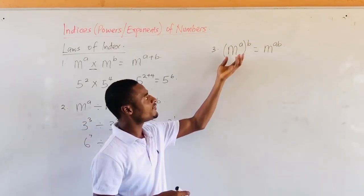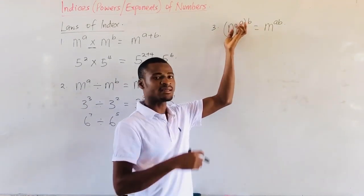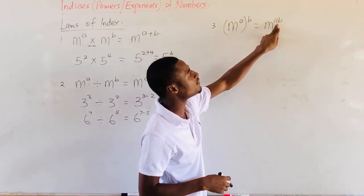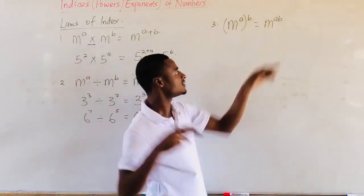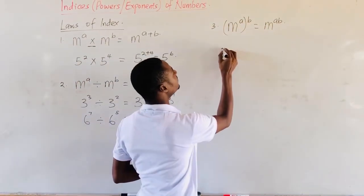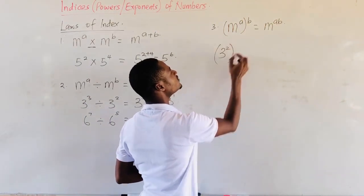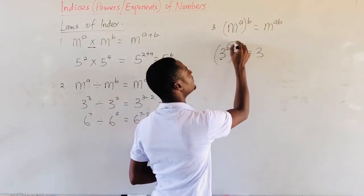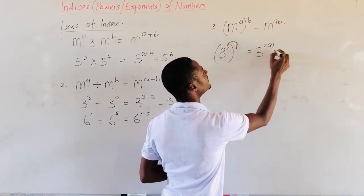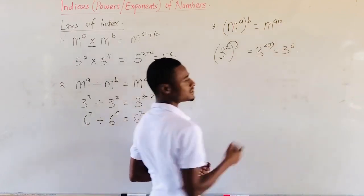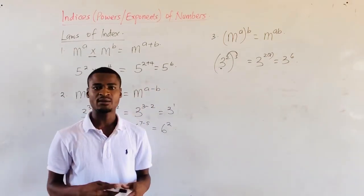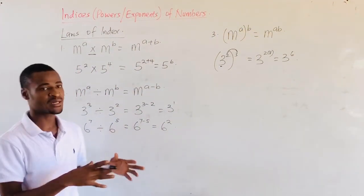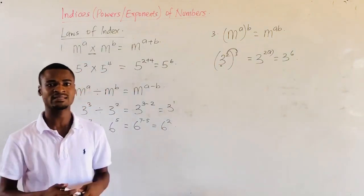The third law of indices deals with a power raised to another power. When we have an exponent raised to another exponent, we multiply the exponents. We will also look at the properties of indices and how we can combine the laws and properties of indices in our general math calculations.